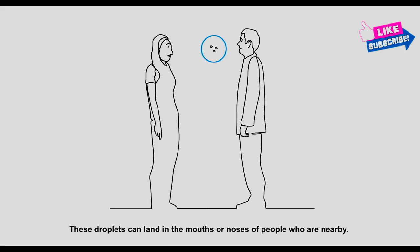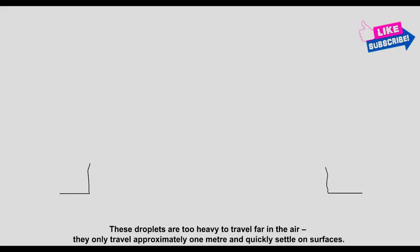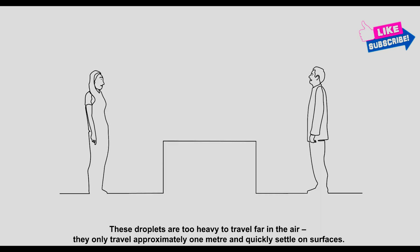These droplets can land in the mouths or noses of people who are nearby. The droplets are too heavy to travel far in the air. They only travel approximately one meter and quickly settle on surfaces.